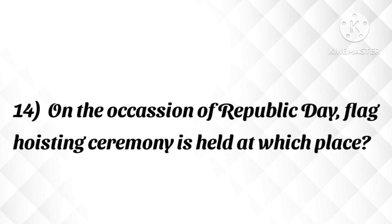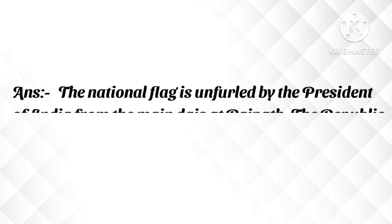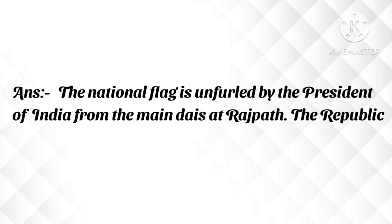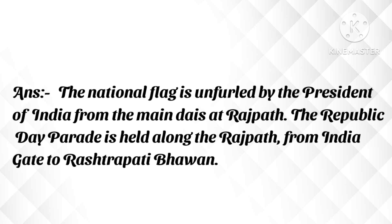On the occasion of Republic Day, the flag hoisting ceremony is held at which place? Answer: The national flag is unfurled by the President of India from the main dais at Rajpath. The Republic Day parade is held along Rajpath from India Gate to Rashtrapati Bhavan.